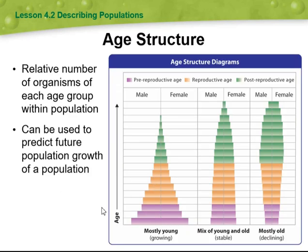Then we're going to move and talk about age structure — the relative number of organisms of each age group within a population, which can be used to predict future population growth. For example, we have the pre-reproductive age, reproductive age, and post-reproductive age.